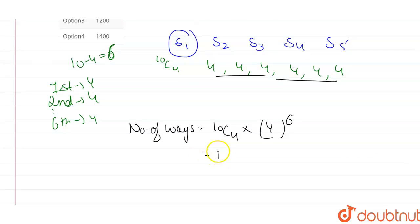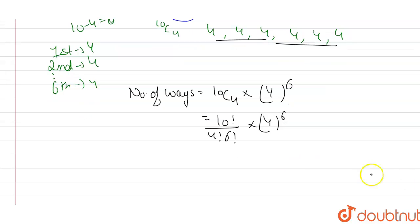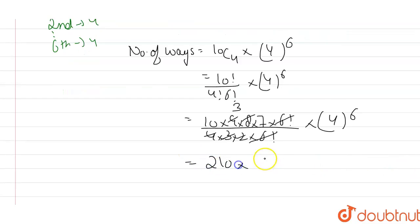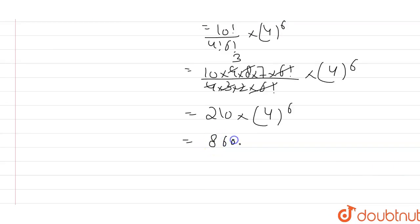This 10C4 value can be expanded as 10 factorial divided by 4 factorial and 6 factorial, into 4 to the power 6. This becomes 10 × 9 × 8 × 7 × 6! divided by 4 × 3 × 2 × 6!, into 4^6. The 6 factorials cancel out, 2 cancels with 8, and 3 cancels with 9, giving us 210 × 4^6. Multiplying 210 with 4^6 (which is 4096), the result is 860160.